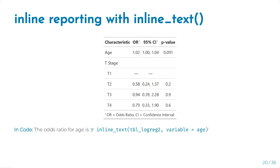The inline_text function can be used with any gtsummary object — a tbl_summary, tbl_regression, or tbl_uvregression — and allows you to pluck out any element or statistic from your table and report it inline in your R Markdown report. For example, to report the odds ratio for age, you specify it in an inline R code chunk, and when you knit, it outputs a nicely formatted odds ratio. This is very useful for reproducibility: if tables or underlying data change, the R Markdown report text updates automatically.